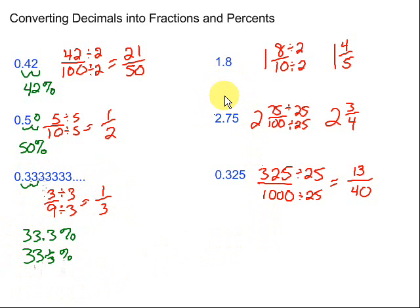1.8. Again, two decimal places to the right. One, two. Fill in that zero. We'd get 180%. This one, again, two decimal places to the right, 275%. And finally, two decimal places to the right. Doesn't matter how many are there, it's always two. We get 32.5%.